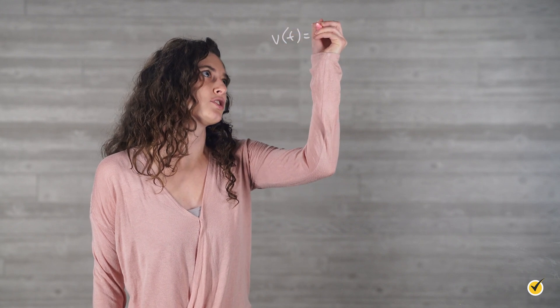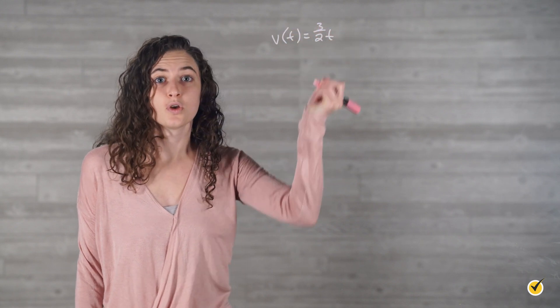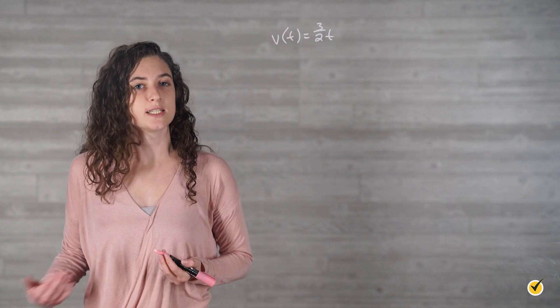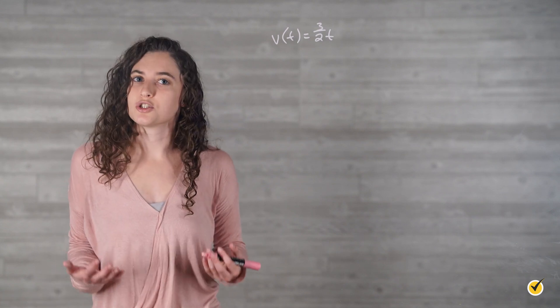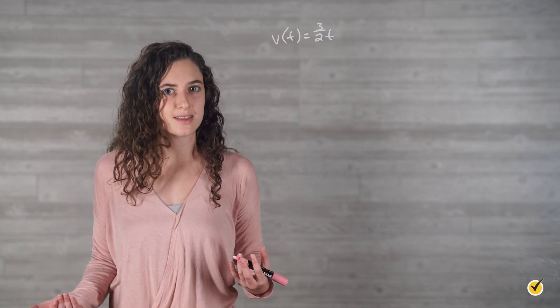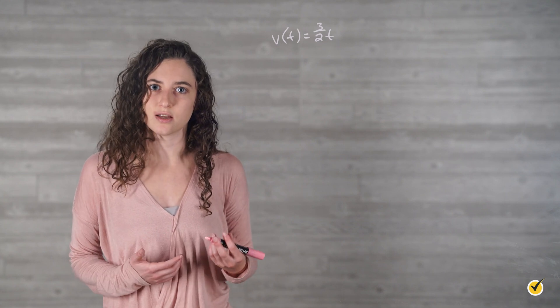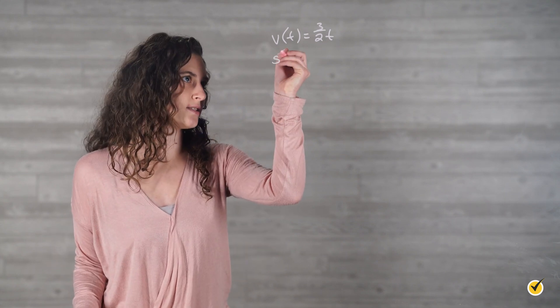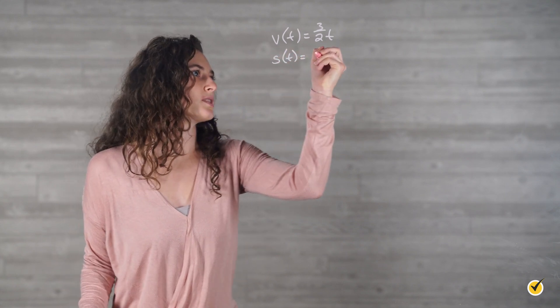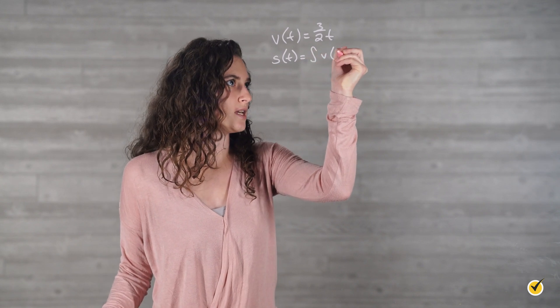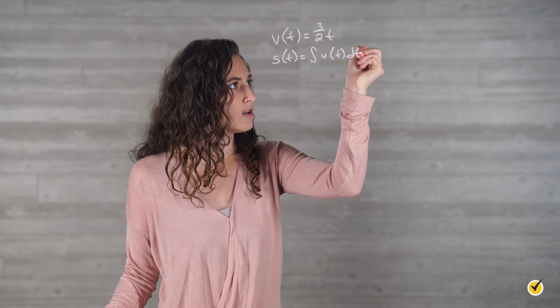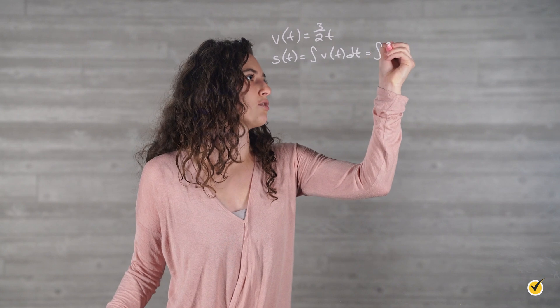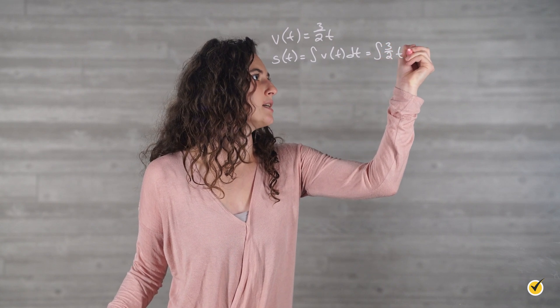For example, if a tire starts rolling down a hill with a velocity function of v = (3/2)t, where t is in seconds and velocity is in feet per second, we can determine its position function by taking the indefinite integral of v. So its position function s is equal to the indefinite integral of v dt, which is equal to the indefinite integral of (3/2)t dt.